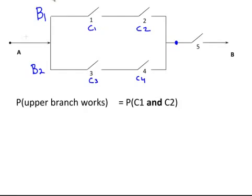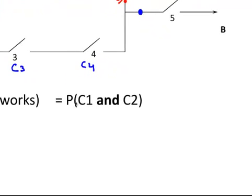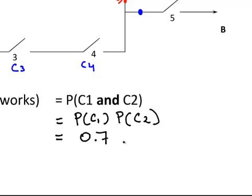So the upper branch B1, we're going up this way first. What is the probability that it can get over here? Well, C1 and C2 must be closed and allowing the current to flow. So these are independent events as we stated. And so this is the probability of C1 times the probability of C2. And I stated earlier that that is 0.7 times 0.6 and that's equal to 0.42.